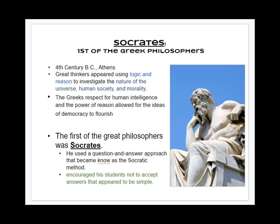These Greek thinkers based their philosophies on two key assumptions: first, the universe — the land, sky, and sea — is put together in an orderly way with structure and absolute, unchanging laws we can study; and second, people can understand these laws through their own logic and reason. The Greeks' respect for human intellect and the power of reason allowed the ideas of democracy to flourish.